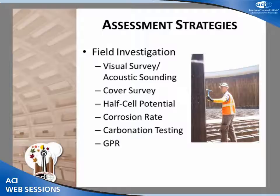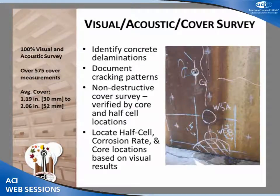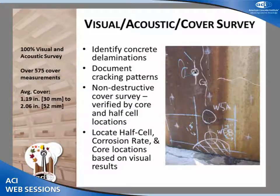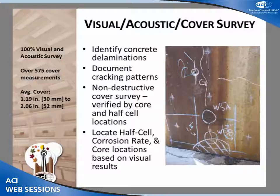Field investigation strategies included a visual survey, acoustic hammer sounding, a cover survey, half-cell potential, and corrosion rate testing. We did a 100% visual survey — every top, bottom, and side of every beam, girder, pier, the perimeter wall, and the slab. We identified any visual or audible delaminations and documented crack patterns for cracks greater than 10 mils. For the non-destructive cover survey, you always want to calibrate your equipment and verify with destructive openings — when we drilled for half-cell connections, we confirmed the cover measurement was indeed correct.